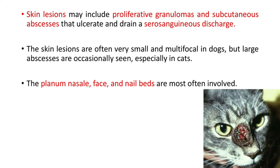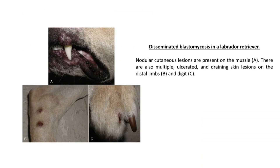Skin lesions may include proliferative granulomas and subcutaneous abscesses that ulcerate and drain serosanguineous discharge. Skin lesions are often very small and multifocal in dogs, but large abscesses are occasionally seen in cats, and the planum nasale, face, and nail beds are most often affected. In a Labrador Retriever with disseminated blastomycosis, you can see nodular cutaneous lesions and multiple ulcerated and draining skin lesions on the distal limbs and digits.